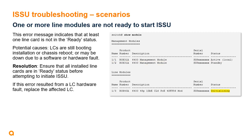The next potential issue is the error message: 'One or more line modules are not ready to start ISSU.' This indicates that at least one line card is not in ready status. This could be caused by a recently installed line card that is still booting, the chassis having been recently rebooted with line cards still booting, or a line card down due to a hardware or software fault. To resolve this, ensure all installed line cards are in a ready status before initiating ISSU. If the error resulted from a line card hardware fault, replace the affected line card.